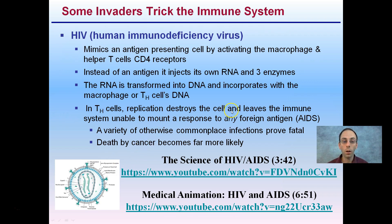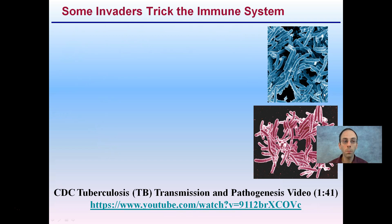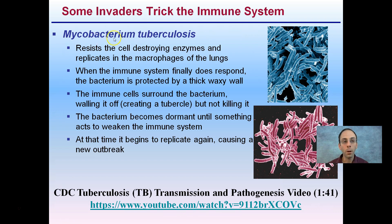Another great invader of the immune system is tuberculosis — specifically, mycobacterium tuberculosis. This bacterium resists the cell-destroying enzymes and replicates in the macrophages of the lungs in particular. When the immune system finally does respond, the bacterium is protected by a thick waxy wall.